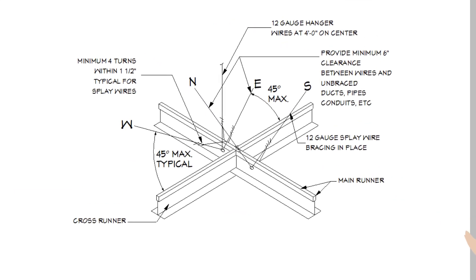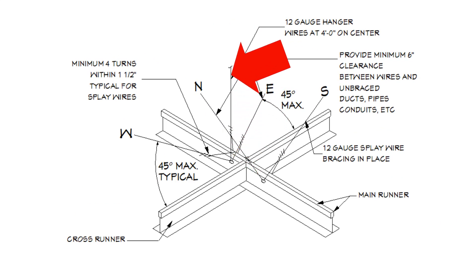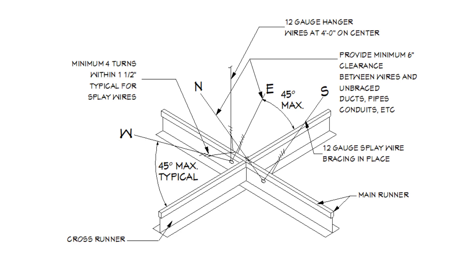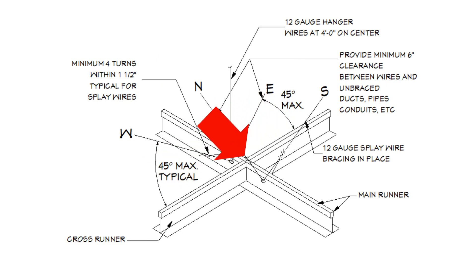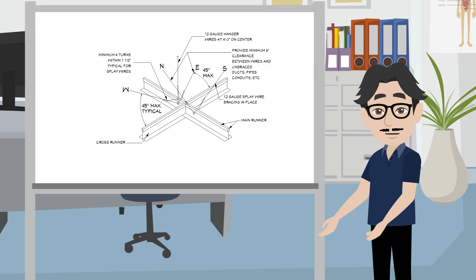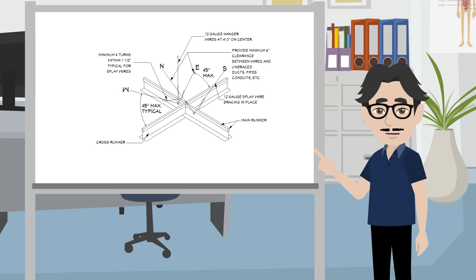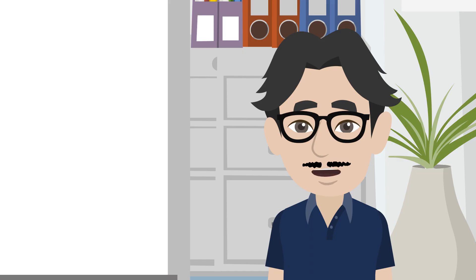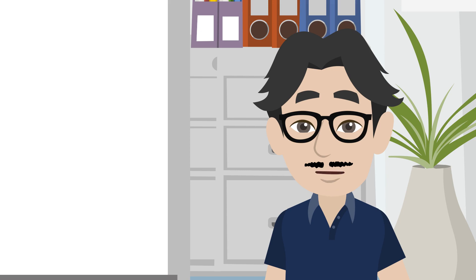Acoustic ceiling tiles, or ACTs, are also suspended with wires from the structure of the roof or floor above. The main difference in how ACTs are suspended is that there is no C-frame and hat channel system to screw these tiles to. Instead, these tiles are laid in place on a grid that is constructed from continuous main runners and intermediate cross T's that clip into the main runners. This ceiling construction method provides very easy access to the surfaces above the ceiling — if there is a plumbing leak overhead, a plumber can easily pop up the tile and service the leaky pipe. Overall, for commercial buildings, acoustic ceiling tiles on a ceiling grid are the most economical ceiling construction method.